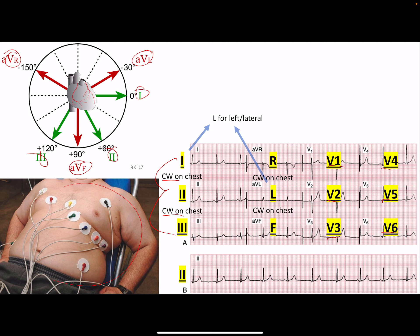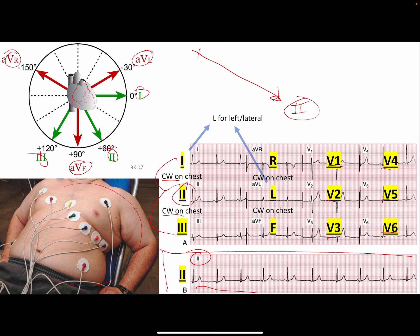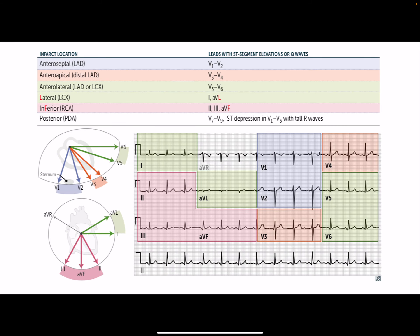Lead II is the most important and most famous lead — the net current passes almost straight toward it. That's also one of the things wrong with the Wolverine EKG: they show just one lead when a real EKG has 12. At the bottom of an EKG you'll often see Lead II highlighted separately because if you've got a quick 10 seconds to glance at one, Lead II is what you look at.